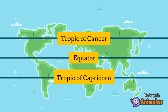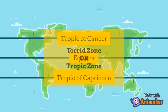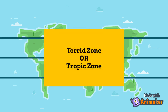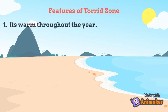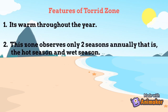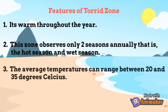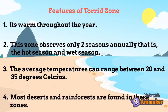The area between the Tropic of Cancer and Tropic of Capricorn is called the Torrid Zone, also known as the Tropic Zone. Features of the Torrid Zone: it is warm throughout the year. This zone observes only two seasons annually — the hot season and the wet season. The average temperatures can range between 20 and 35 degrees Celsius. Most deserts and rainforests are found in this zone.